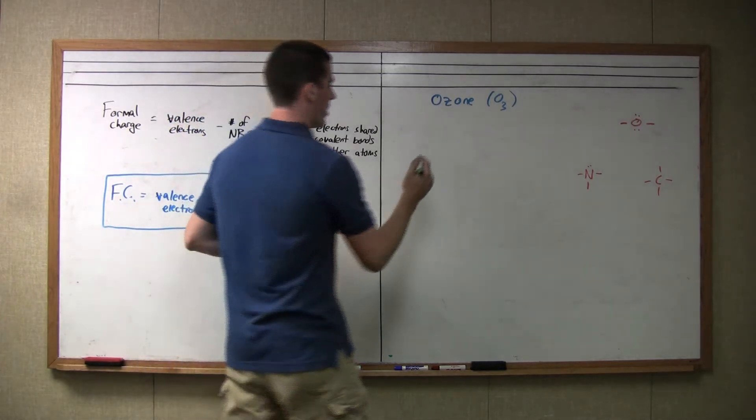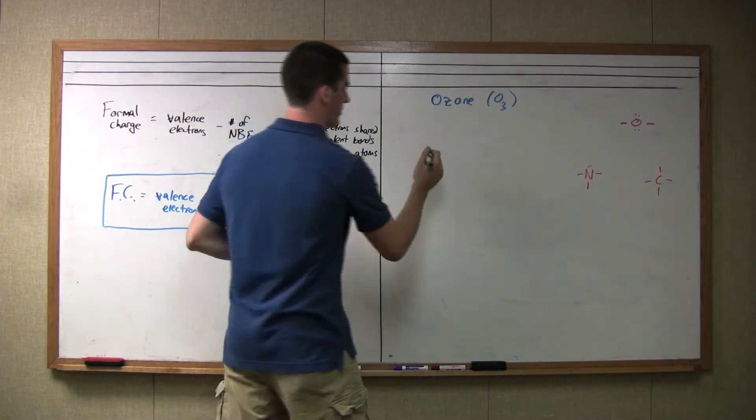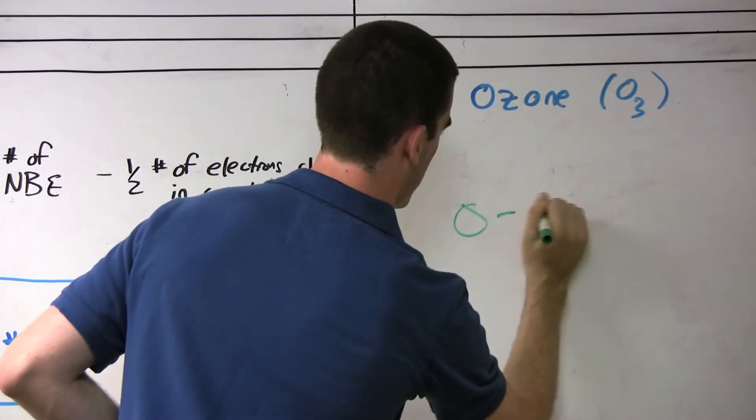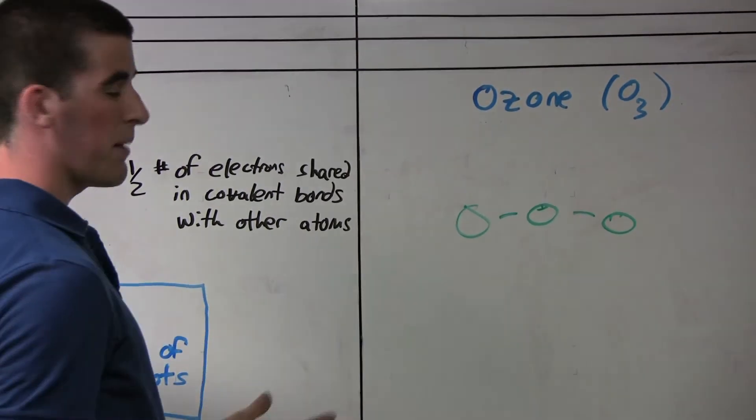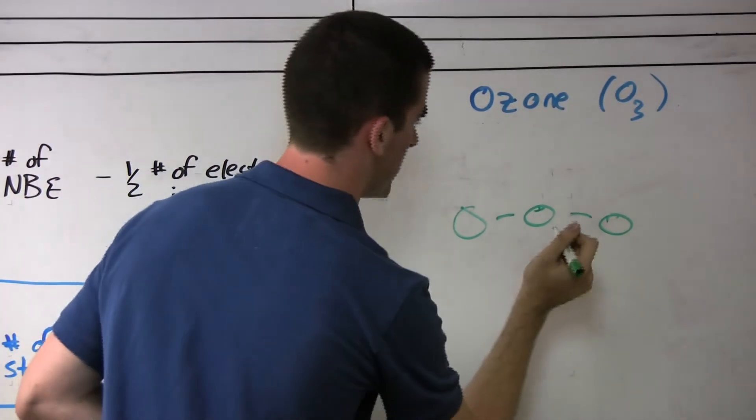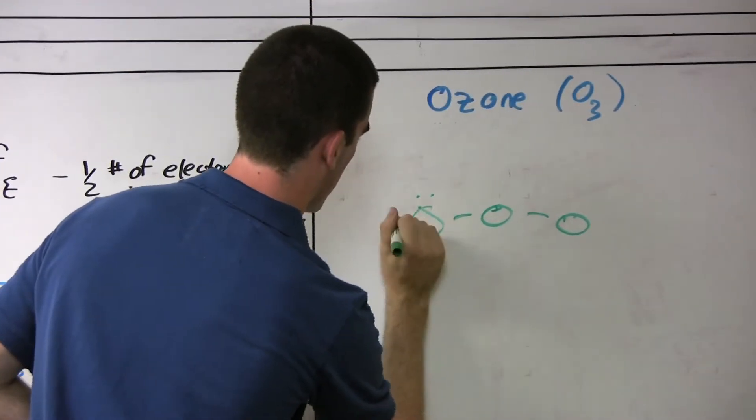But back to actually drawing ozone, there's a couple ways to draw it, but one of them is by connecting like this, O3. We see that the bonds are drawn as sticks, and the non-bonding will be drawn as dots. So one of the ways is to draw like this.